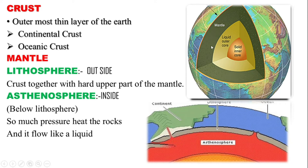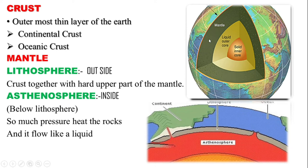The mantle can also be understood in terms of the lithosphere and asthenosphere. The lithosphere is the outer portion — that is, the crust together with the hard part of the mantle. The asthenosphere is below the lithosphere; it is the inner portion under high pressure and heat, and it flows like a liquid. The innermost part consists of the inner core and outer core.